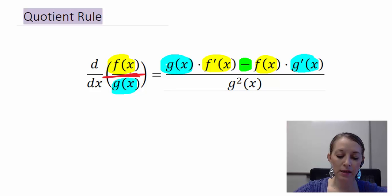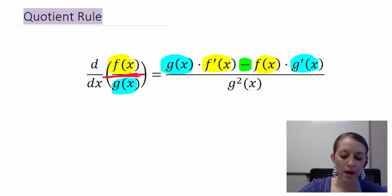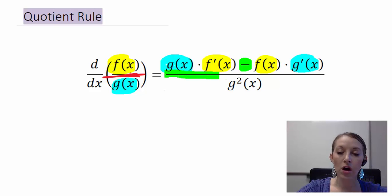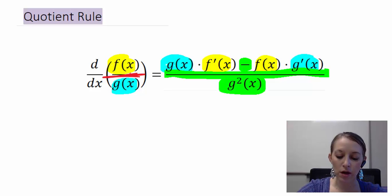Whenever you see f, that represents the numerator, and whenever you see g, that represents the denominator. So we have: the bottom times the derivative of the top, minus the original of the top times the derivative of the bottom, all divided by the original of the bottom squared. One more time: the original of the denominator times the derivative of the numerator, minus the original of the numerator times the derivative of the denominator, all over the denominator squared.